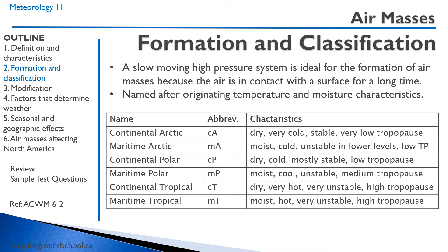We name the air masses after their originating temperature and moisture characteristics. In Canada, for example, we have continental Arctic (CA) air, which is dry, very cold, stable air with a low tropopause. It originates in the Arctic regions. We have maritime Arctic, which is similar to the continental Arctic, but it's moist cold air.